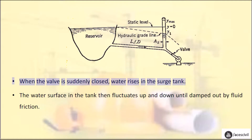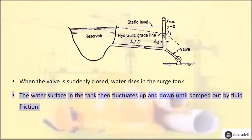When the valve is suddenly closed, water rises in the Surge Tank. The water surface in the tank then fluctuates up and down until damped out by fluid friction.